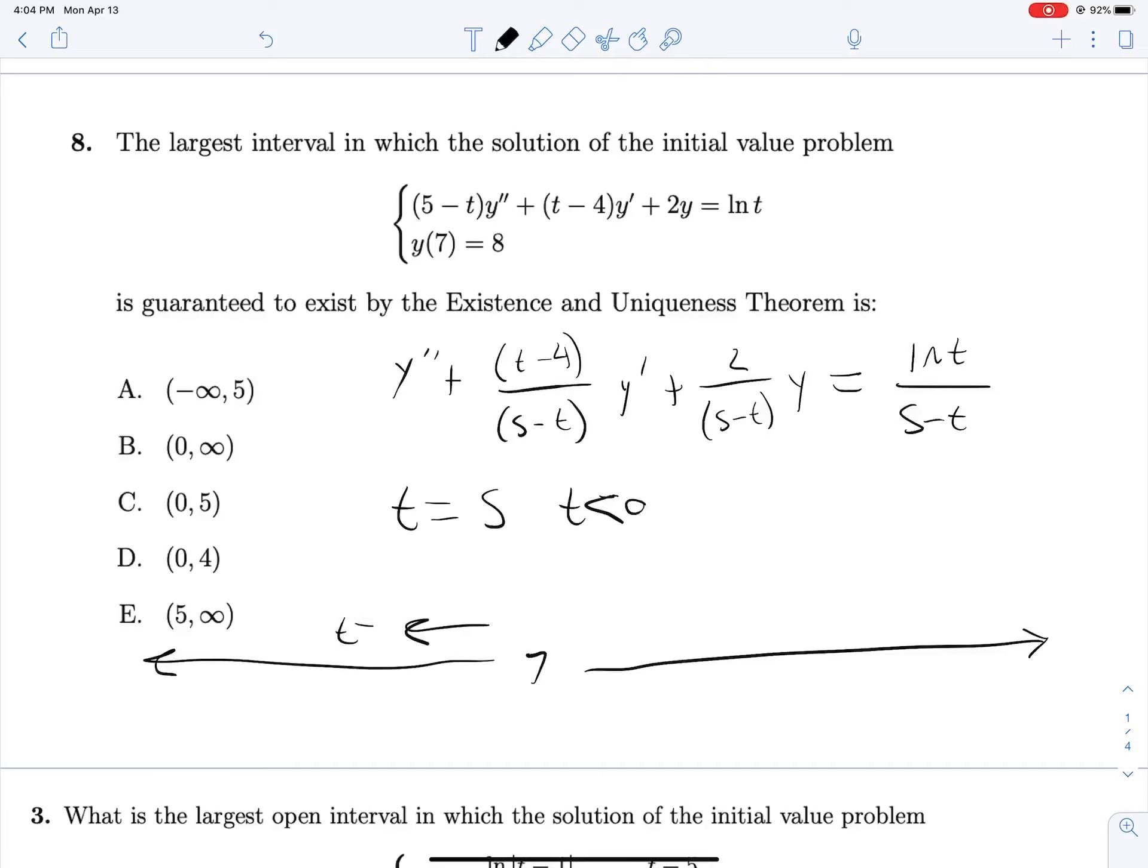We will hit t equals 5 on this side, but we can go all the way to infinity over here without running into any issues. So a solution is guaranteed to exist from 5 to infinity given this initial value.